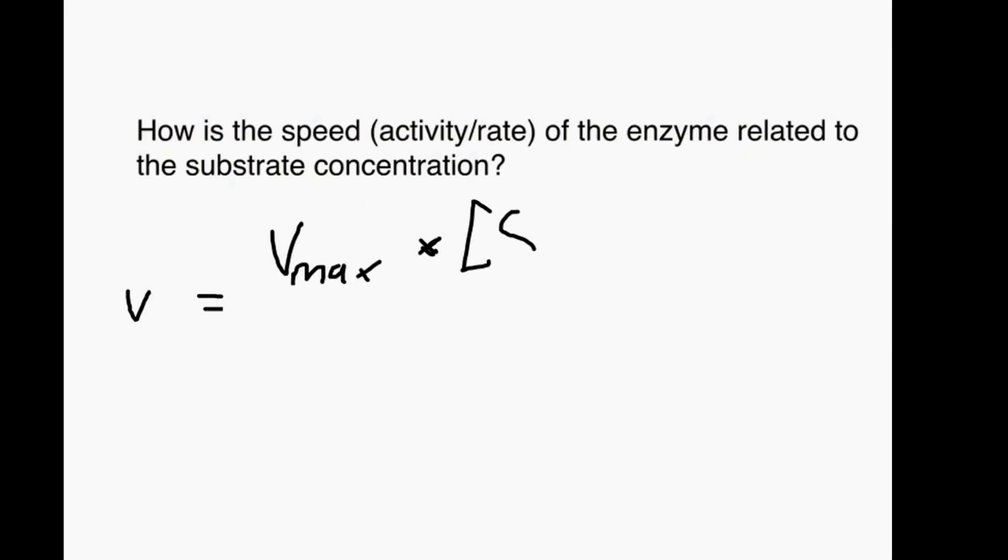It's Vmax times the substrate concentration - and I put this into square brackets, which means substrate concentration - divided by a constant called Km plus the substrate concentration. This is a very important equation.